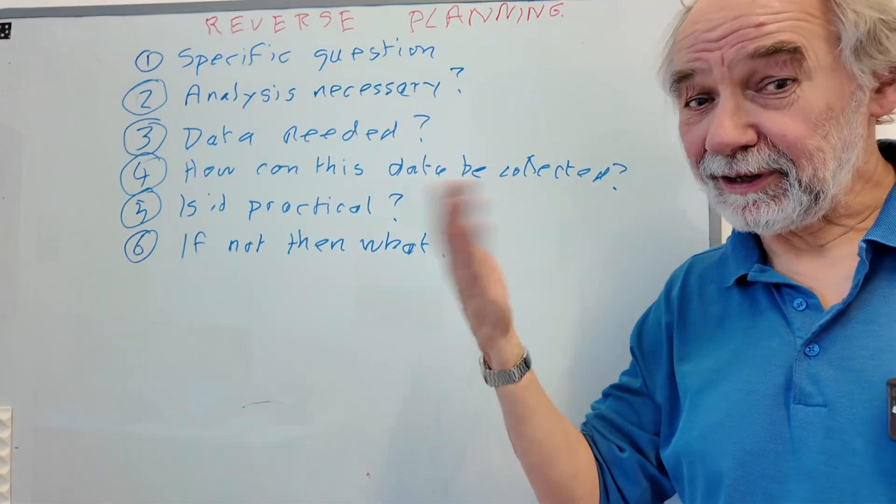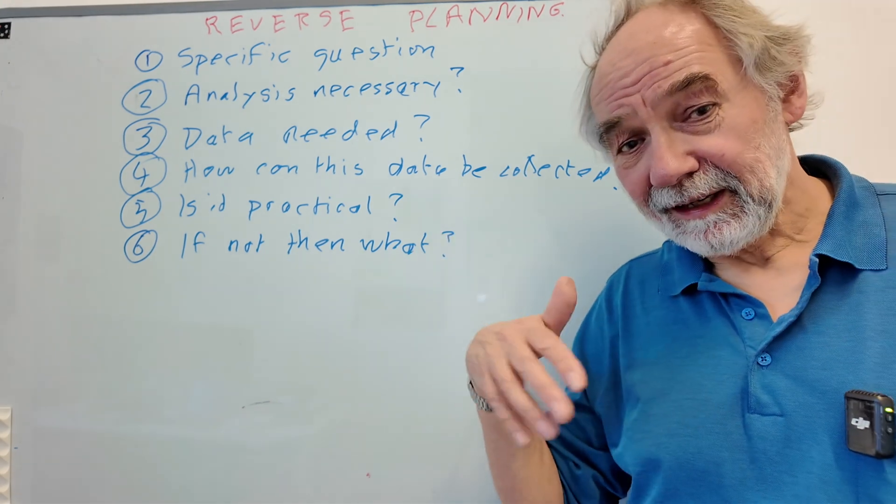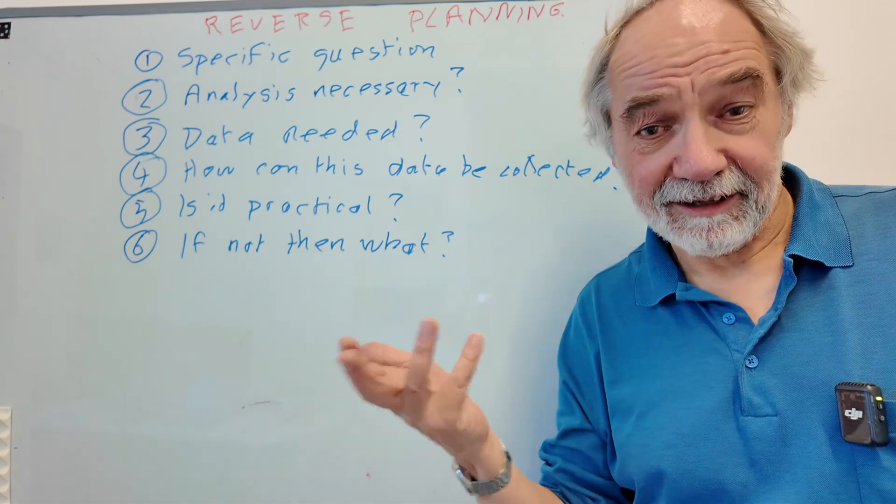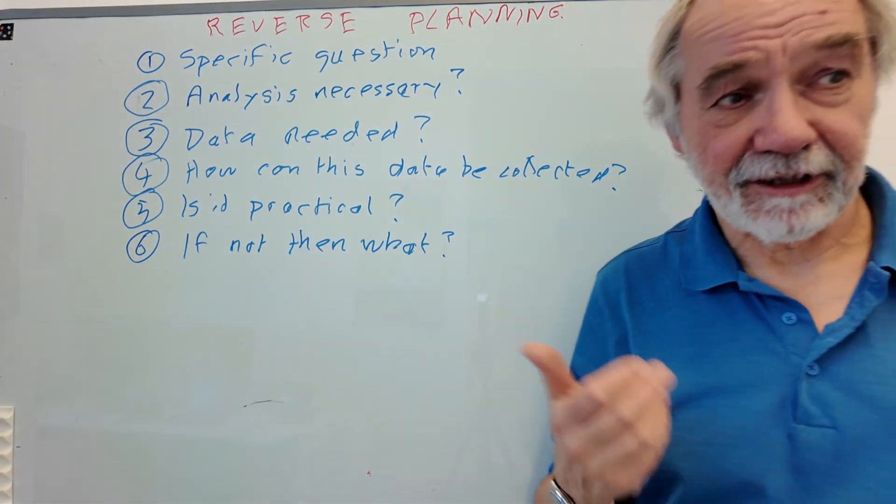Don't run something where you're going to run out of time. And then finally, if this is often the case, it's not going to work, what are you then going to do? We'll then discuss that. So this is what we call the process of reverse planning.